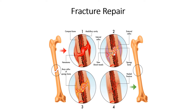اس process میں mostly 2-3 مہینے لگ جاتے ہیں۔ Phase 4 — Remodeling: Over time bones mechanically strong ہوتی جاتی ہیں، highly organized bone tissues بنتے جاتے ہیں اور weak یا disorganized bone tissue سے مسلسل replace ہوتے جاتے ہیں۔ یہ remodeling کا process مسلسل چلتا رہتا ہے جب تک bone fully repair نہ ہو جائے۔